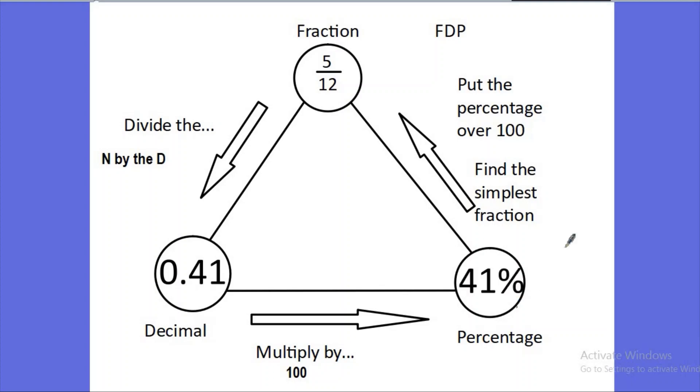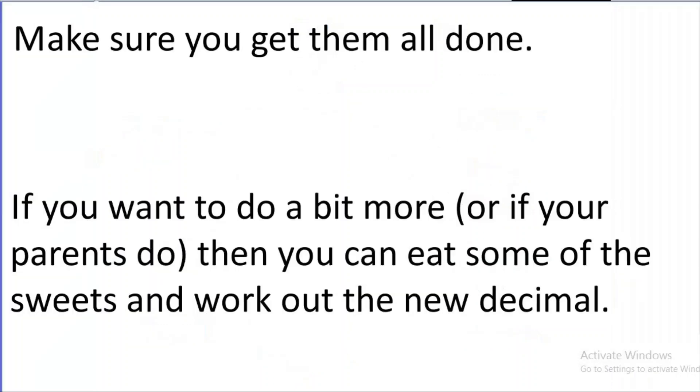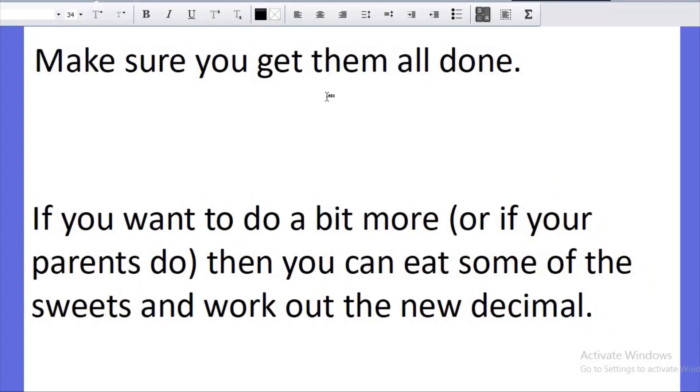Now, can you do that with all of them? I reckon you can. Have you enjoyed having some sweets? You've not eaten them yet, but if you want a bit of a challenge, or if your parents want you to have a bit more of a challenge, you can eat some of the sweets—maybe eat three or four—and then go over the whole process again. If I had 12 sweets and five of them were green, maybe I'm going to eat one sweet, maybe one green sweet, and a few more of the others. Maybe I'm going to eat three sweets in total. But if one of them was green, that means my green sweets go down to four and my total sweets go to nine.